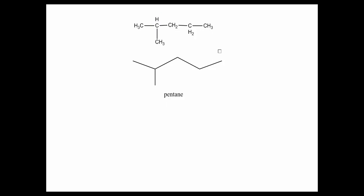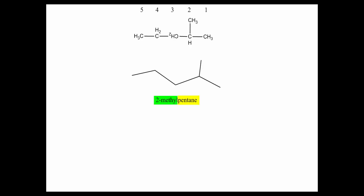Below is the line-angle diagram. You can see that you could start counting from either end carbon, and consider either one a branch if you count from the other carbon. I flipped the molecule over to show that we're still naming it 2-methylpentane, now starting the count from the right side — because according to the rules, we give the methyl branch the lowest assignment number.